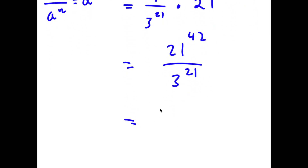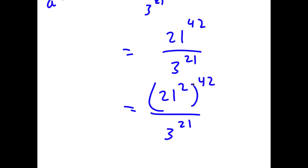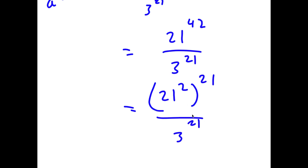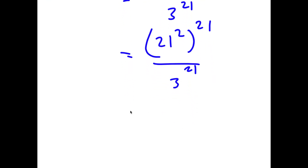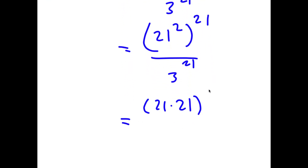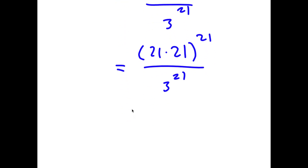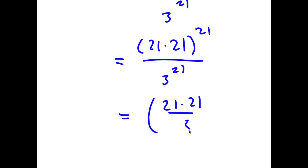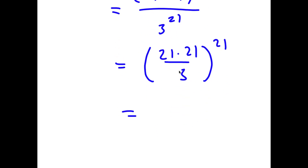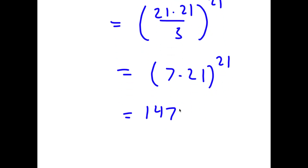Now 21 to the power of 42 is the same as 21 squared to the power of 21. And 21 squared is the same as 21 times 21. So I have 21 times 21 to the power of 21 over 3 to the power of 21, which is equal to 21 times 21 over 3, all to the power of 21. Now 21 divided by 3 is 7, so I have 7 times 21 to the power of 21, which is equal to 147 to the power of 21.